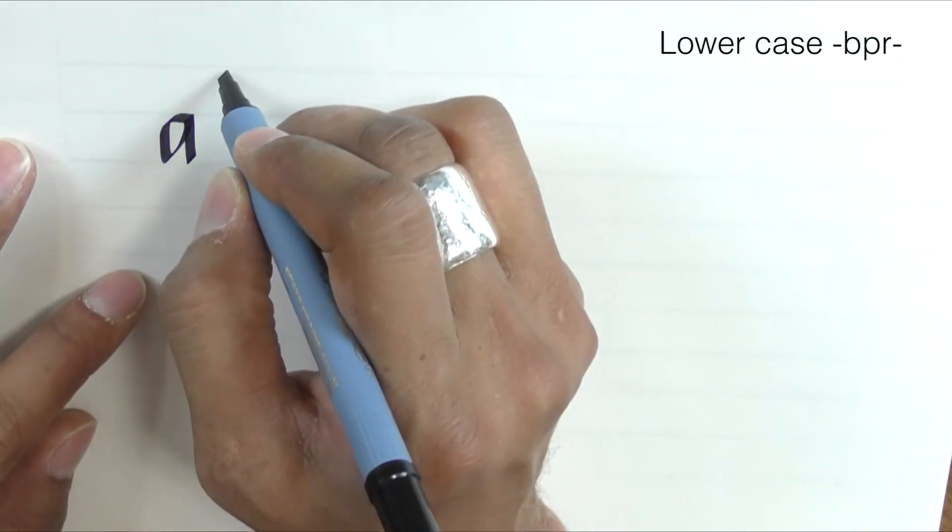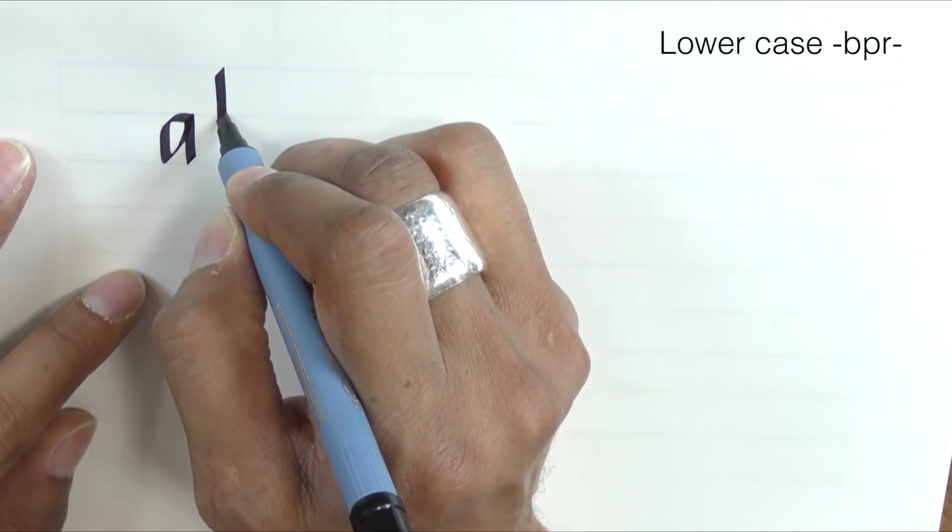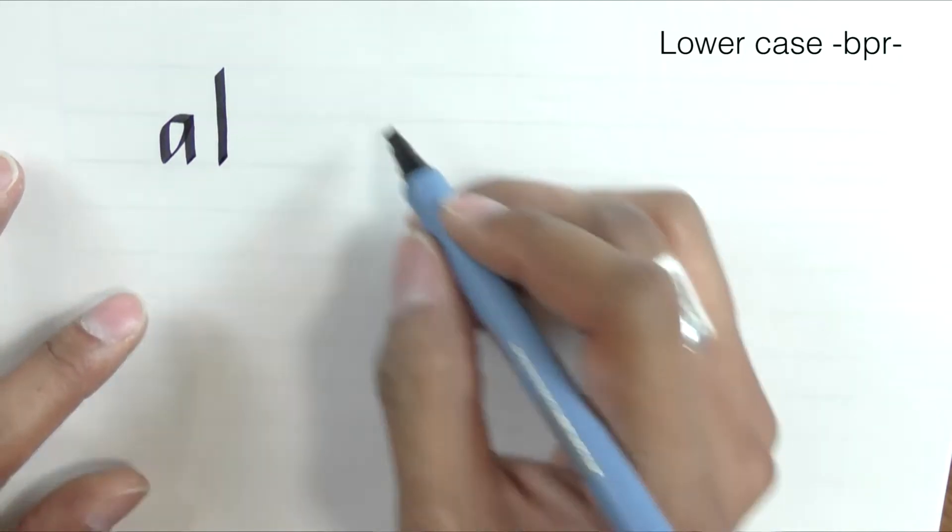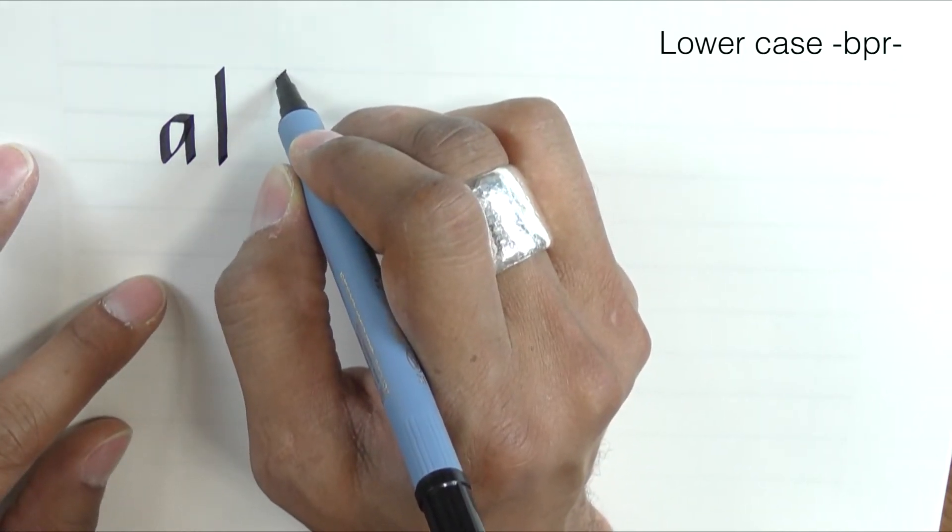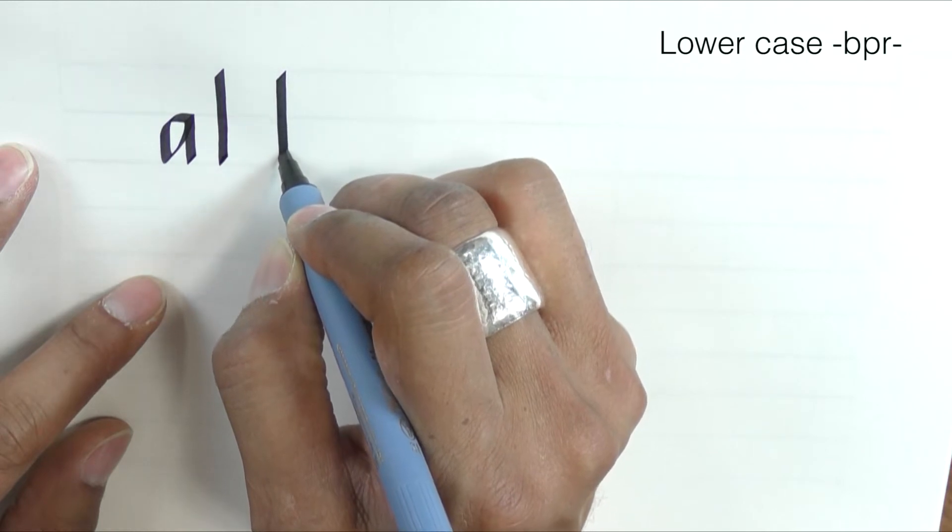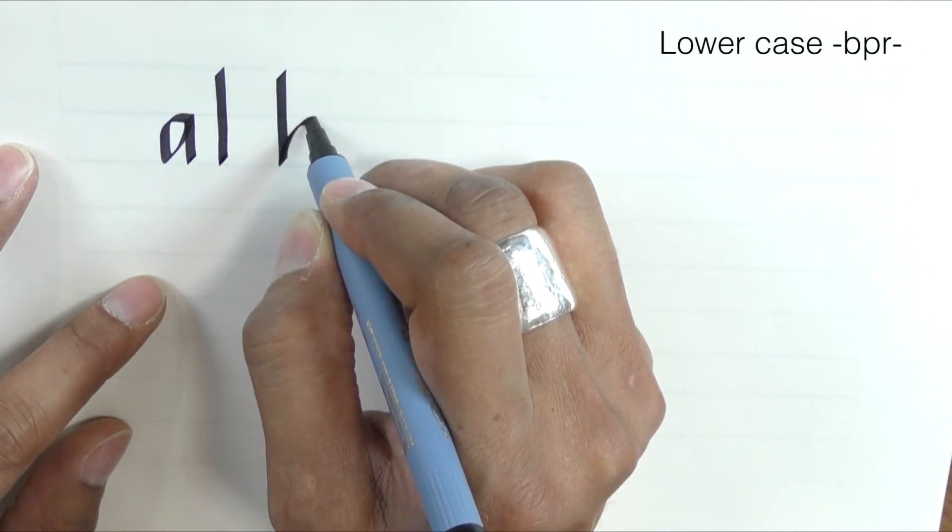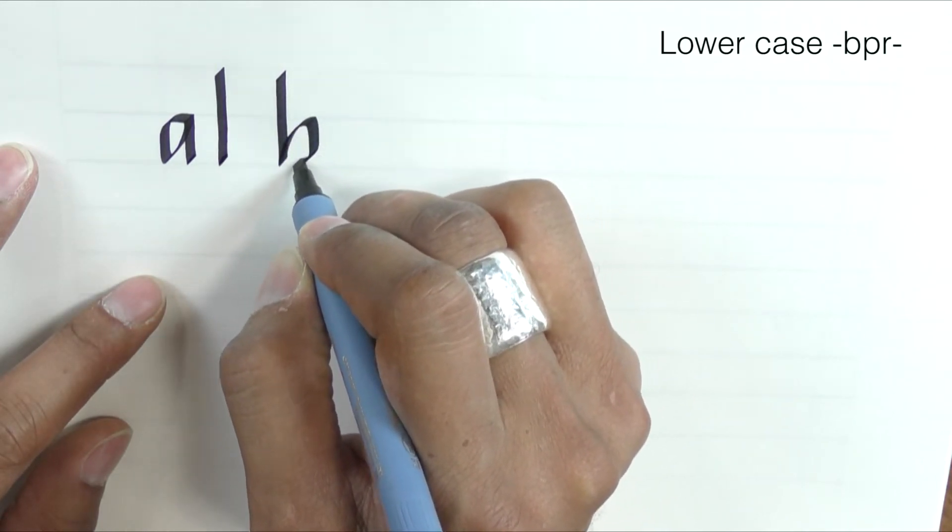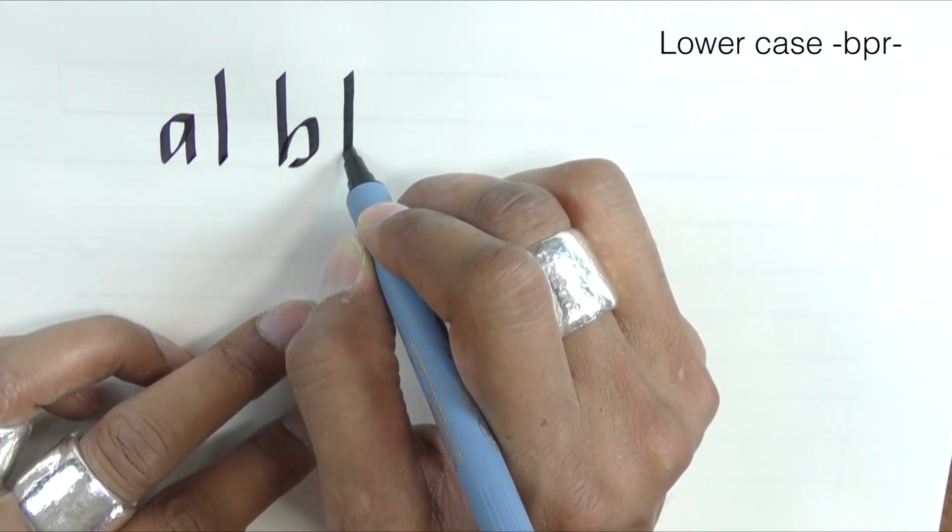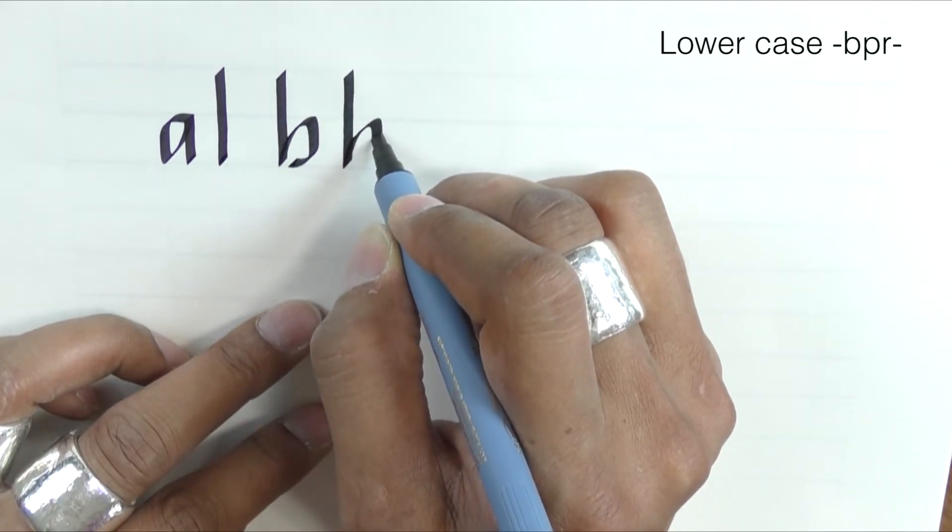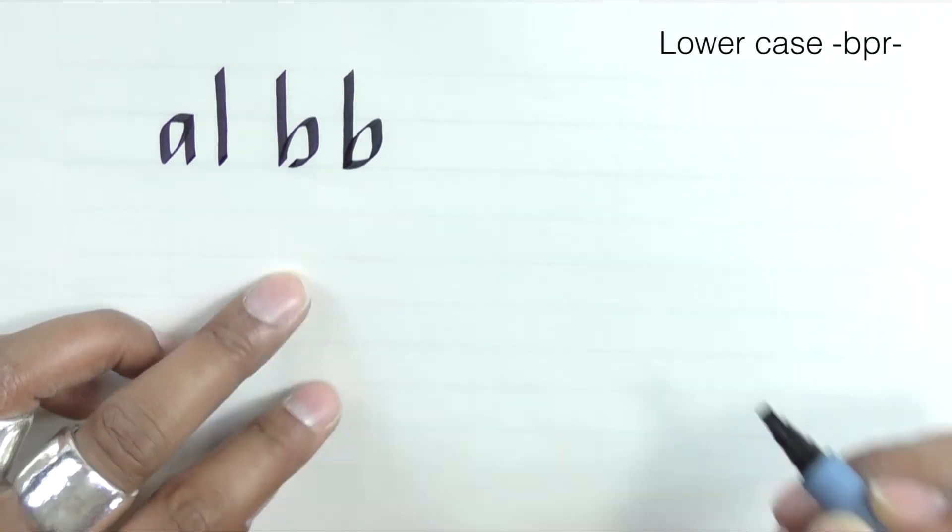The B is a combination of a long stroke as is the P. So we have B, up, back, down and back. One and two and three and four and five and touch.